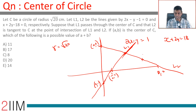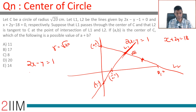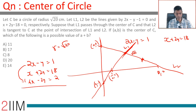The distance from (a, b) to the point of intersection must equal the radius √20. First, let's find where the two lines intersect. We have 2x minus y equals 1, and x plus 2y equals 18. Multiply the second equation by 2: we get 4x minus 2y equals 2. Adding: 5x equals 20, so x equals 4.